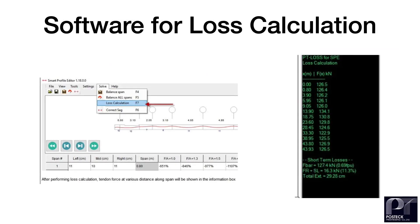At Post-EC Pre-stressing, we have developed software to compute losses for post-tensioned members. This provides an accurate method to predict loss at distance x from the stressing end. This is useful not only for validating the assumed effective stress, but also for investigating the value of stress in tendons along the distance.